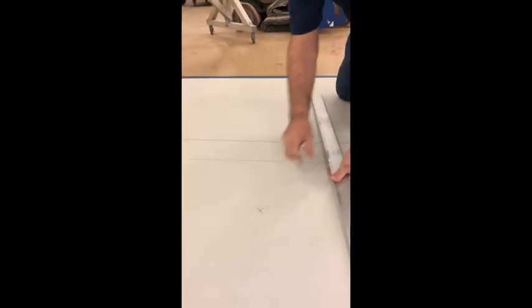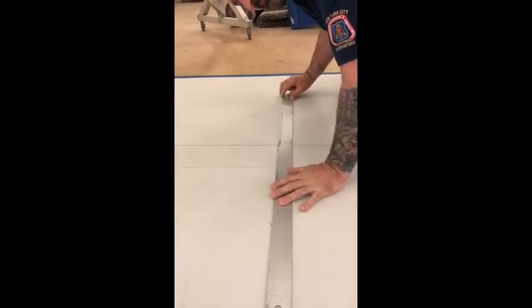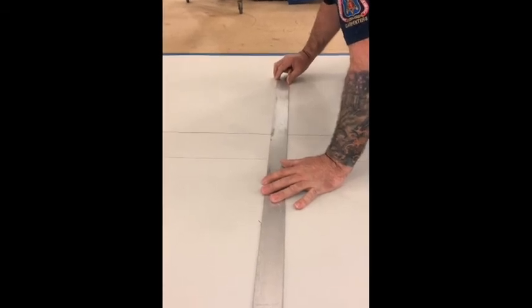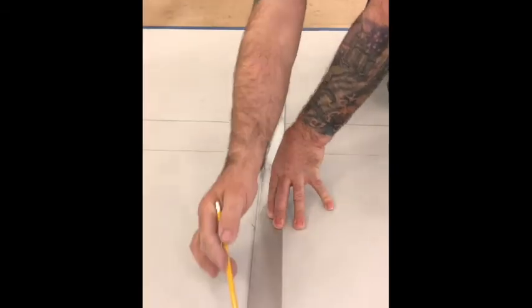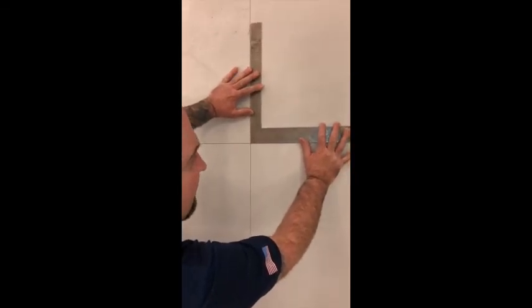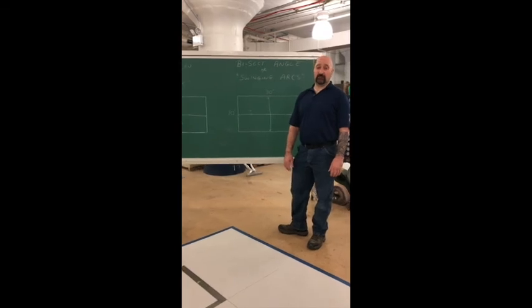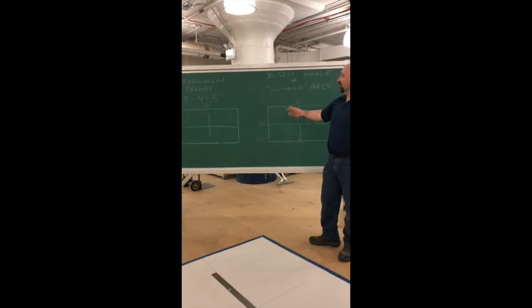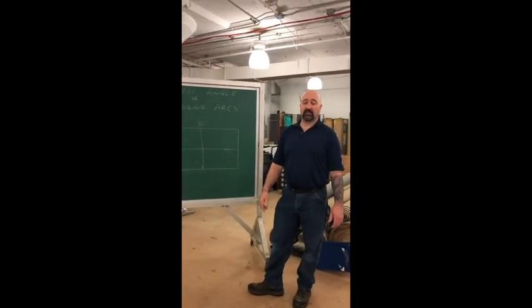Now take a straight edge and put it on your cross marks, making sure that it hits the center point of your layout. As you can see, all your points line up. To double check, put your framing square in there and you can see that it hits on both sides, creating a 90 degree perpendicular line. To install the floor correctly, you must start square. I just showed you two methods: the Pythagorean Theorem 3-4-5 and the Swing and Arc method. Both of these will be very advantageous to you on your floor installations. I'm Andrew Irenzi — thank you for watching.